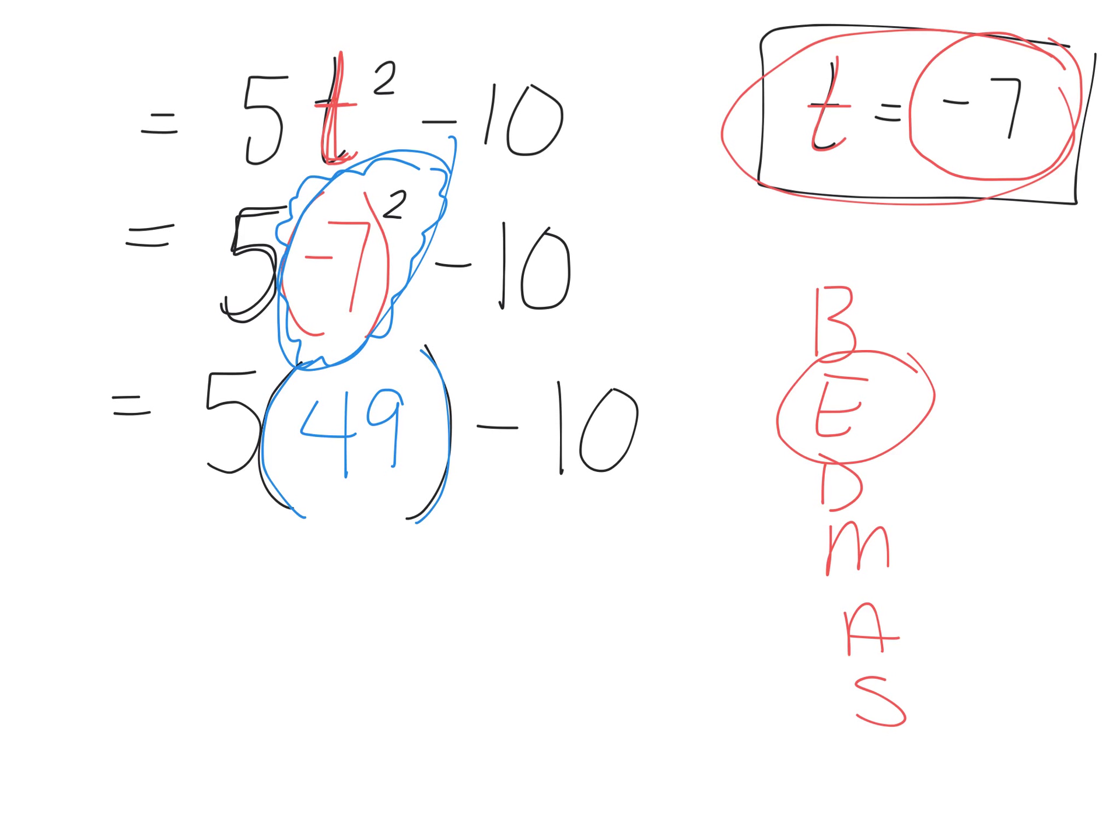So let's keep going. Kyle? 5 times 49 is the next step. Yes? 245. What's your name again? Okay, 245 take away 10 is equal to 235.